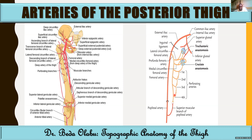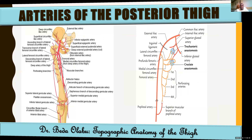When the perforating arteries reach the posterior thigh, their branches connect to form what we call the longitudinal anastomosis within the posterior thigh. In addition, there was also a cruciate anastomosis formed by many arteries, including a branch of the first perforating artery.